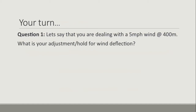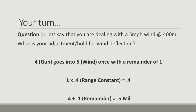Question one for you: you're dealing with a 5 mile-per-hour wind at 400 meters. What is your adjustment or hold for wind deflection? Pause the video, run through the formula, and then unpause and check it against my result. So here's our answer: four gun goes into five once with a remainder of one. One multiplied by our constant, which is 0.4, equals 0.4. Then 0.4 plus our remainder of 0.1 gives us 0.5 of a mil — half a mil.